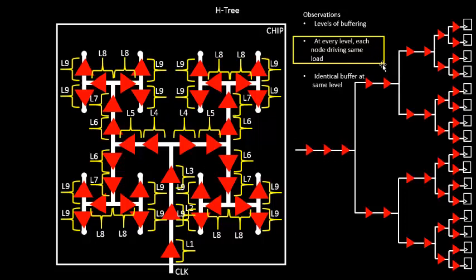So the second observation was that at every level, each node should be driving the same load. So let us look into one of the levels. Let's say we look at the clock buffer at level 5. So this is the level 5 clock buffer and this again is the level 5 clock buffer.